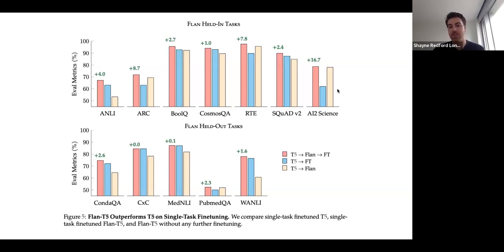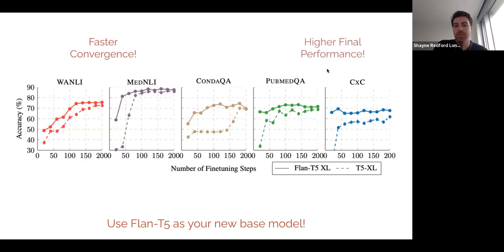And the pattern we're seeing here is that sometimes the yellow bar is above the blue bar, sometimes the blue bar is above the yellow bar, meaning that sometimes it's better just to fine-tune on the one task. Sometimes fine-tuning on all the tasks actually is better for the one task. But in all cases, the red bar is the highest, indicating that using Flan-T5 as your base model for single-target fine-tuning will get you consistently better results. And that's true not just for held-in tasks, but also for held-out tasks, which were not included at all in Flan fine-tuning.